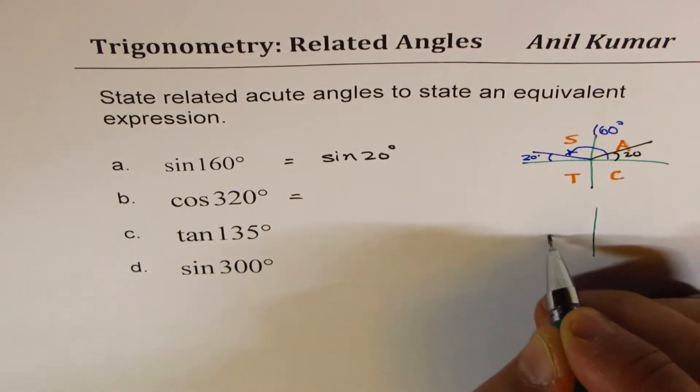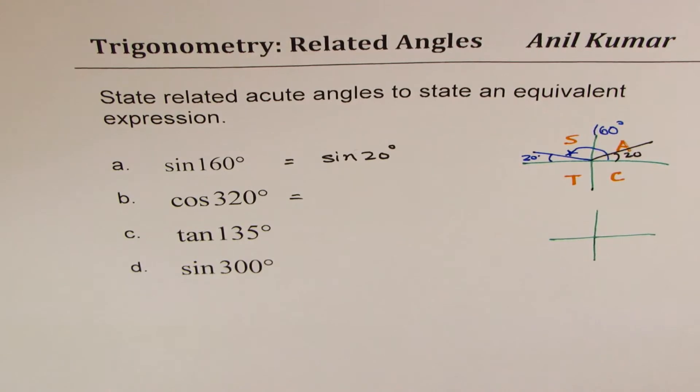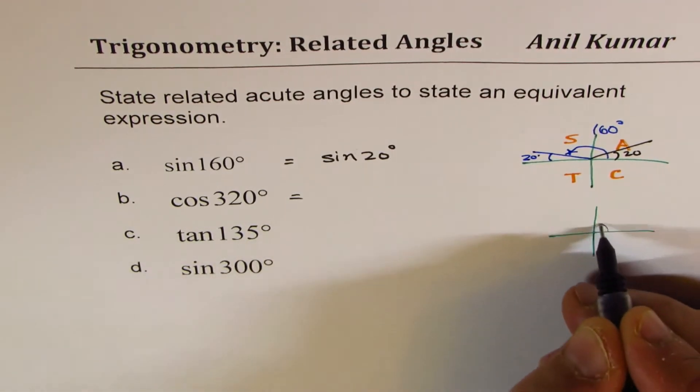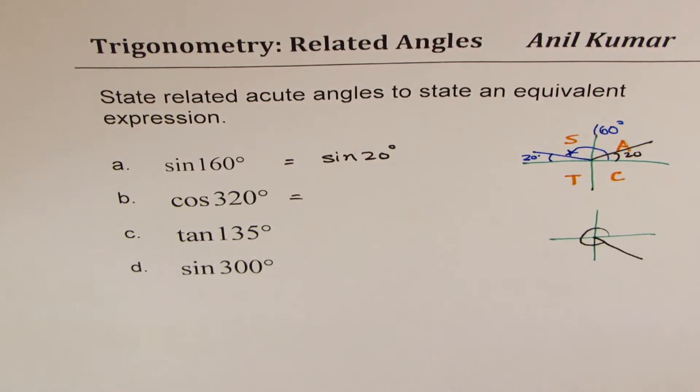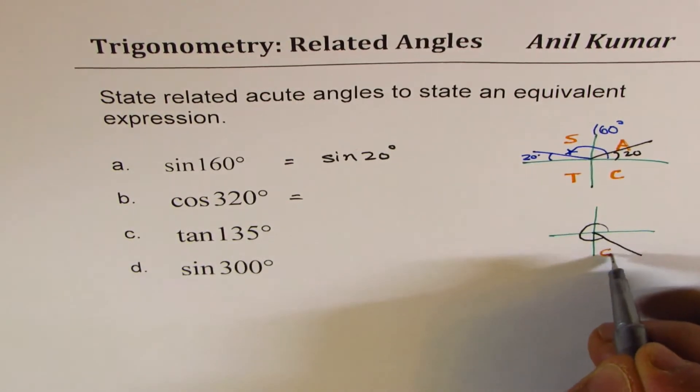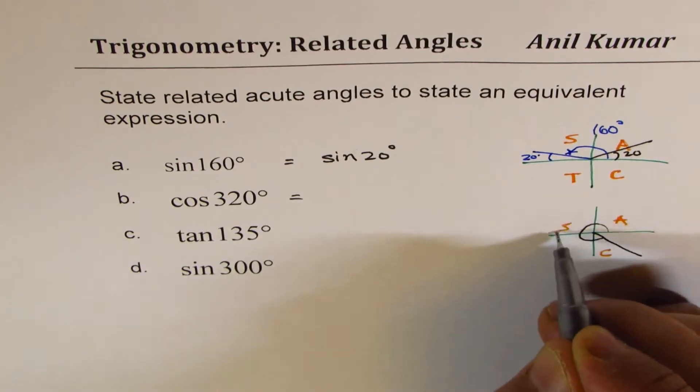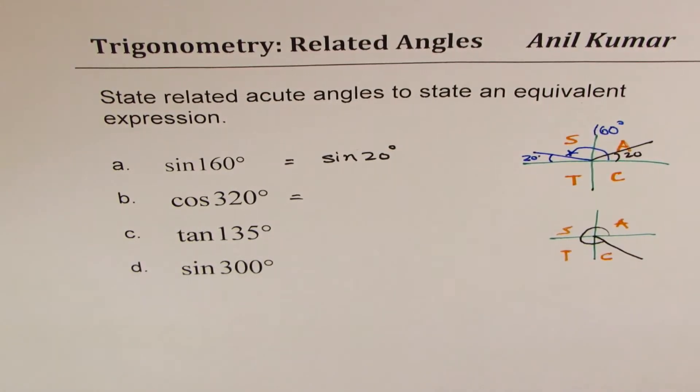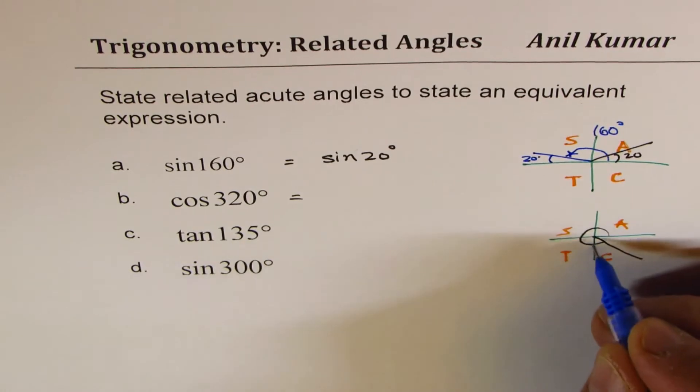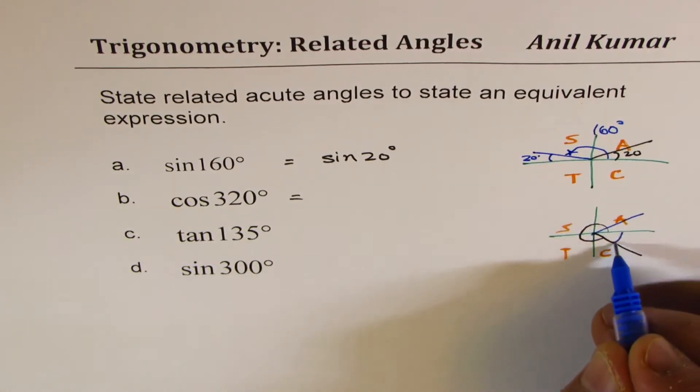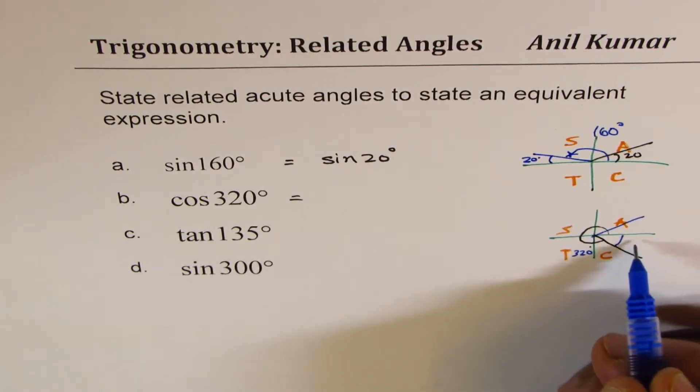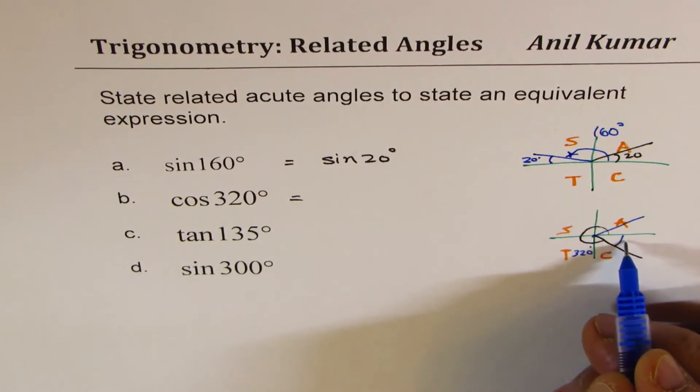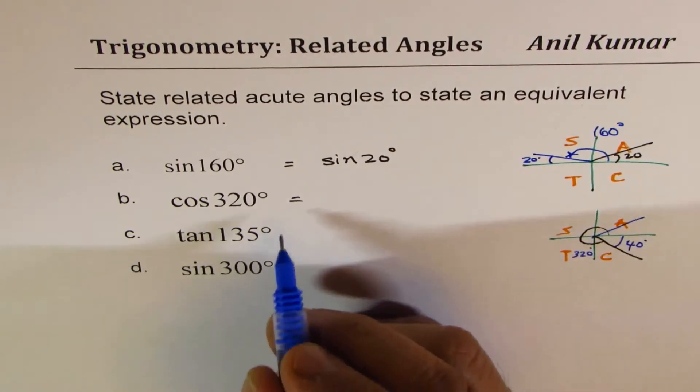So when we say cos of 320 degrees, we mean that the terminal arm is in quadrant 4. In quadrant 4, cos is positive. In quadrant 1 also, cos is positive. Now what is the acute angle here? If principal angle is 320, that has to be 360 minus 320, which is 40 degrees.